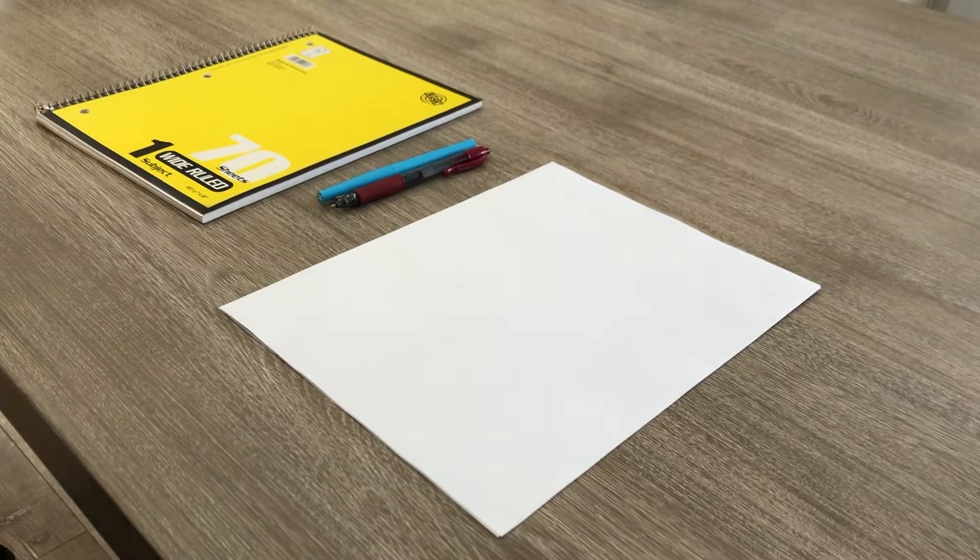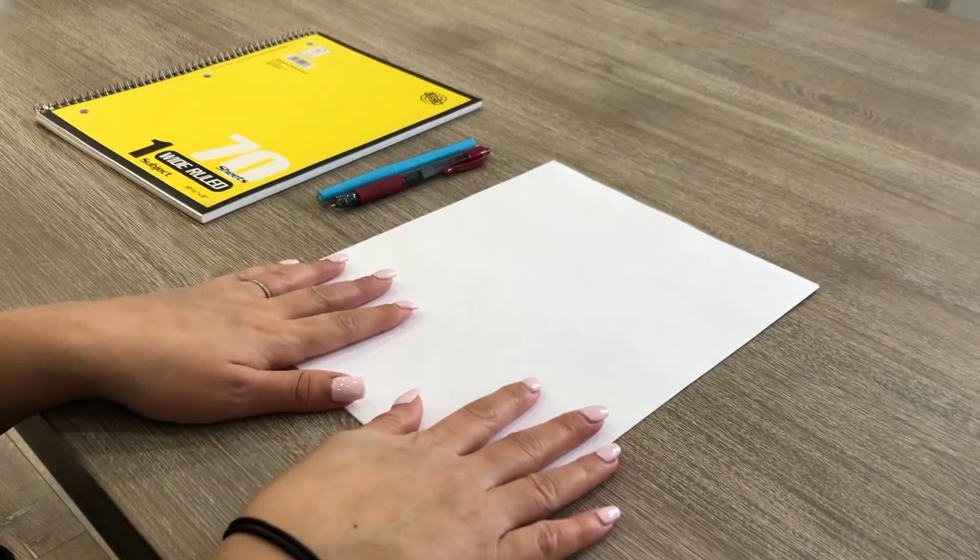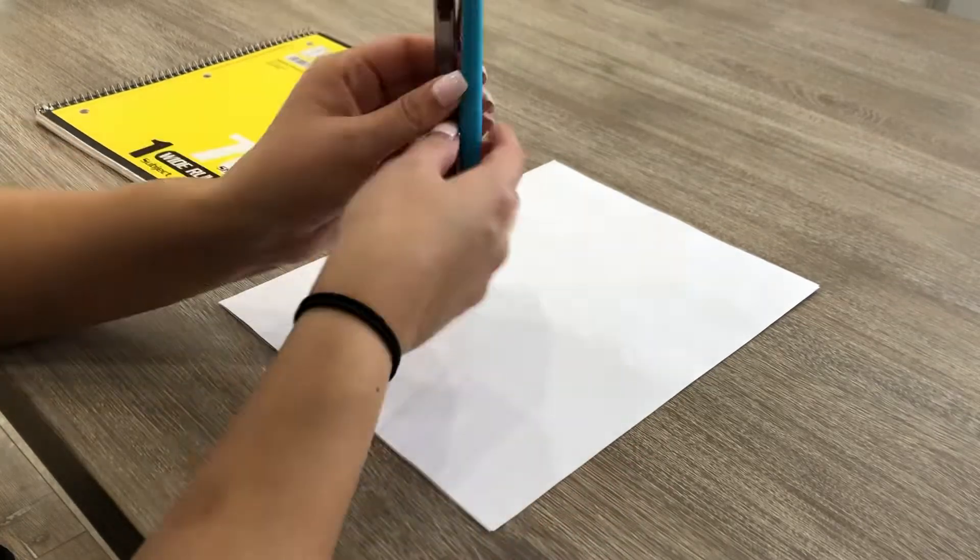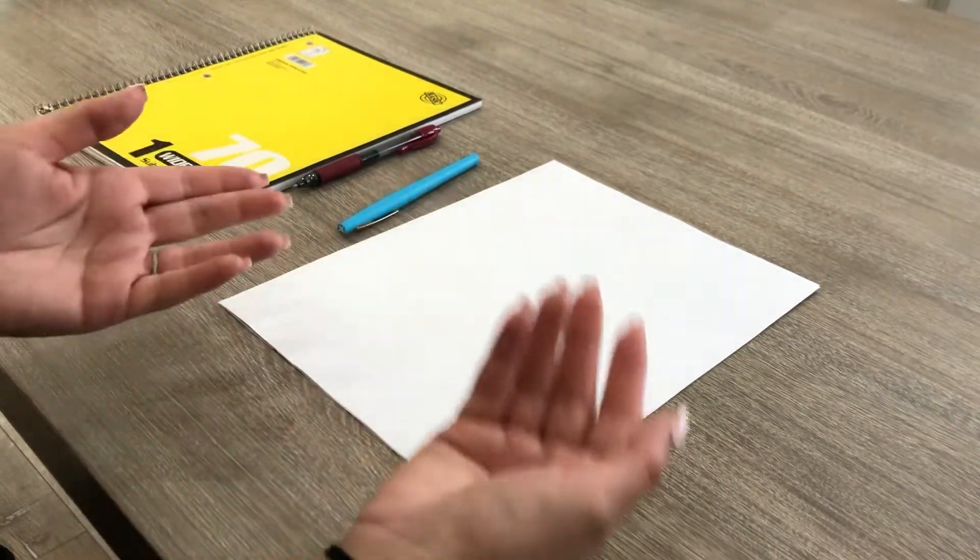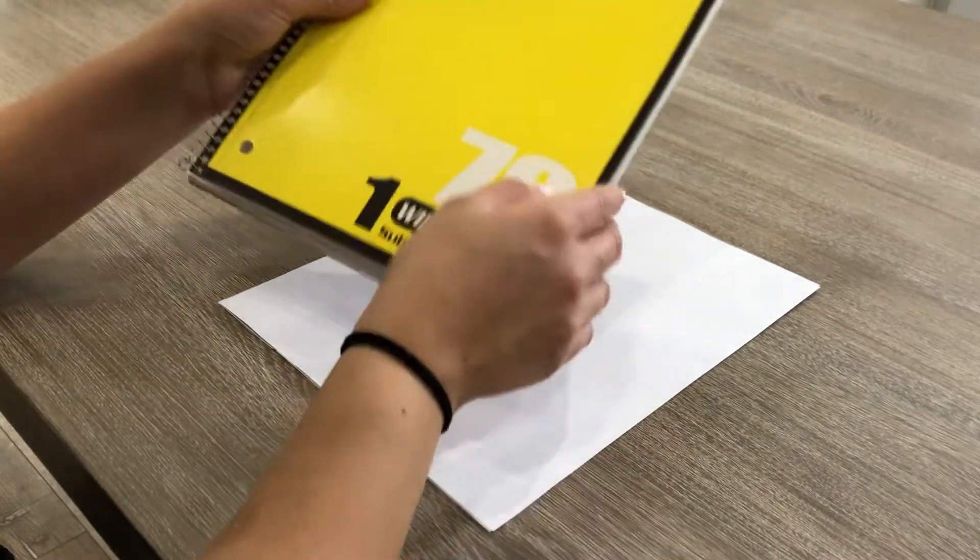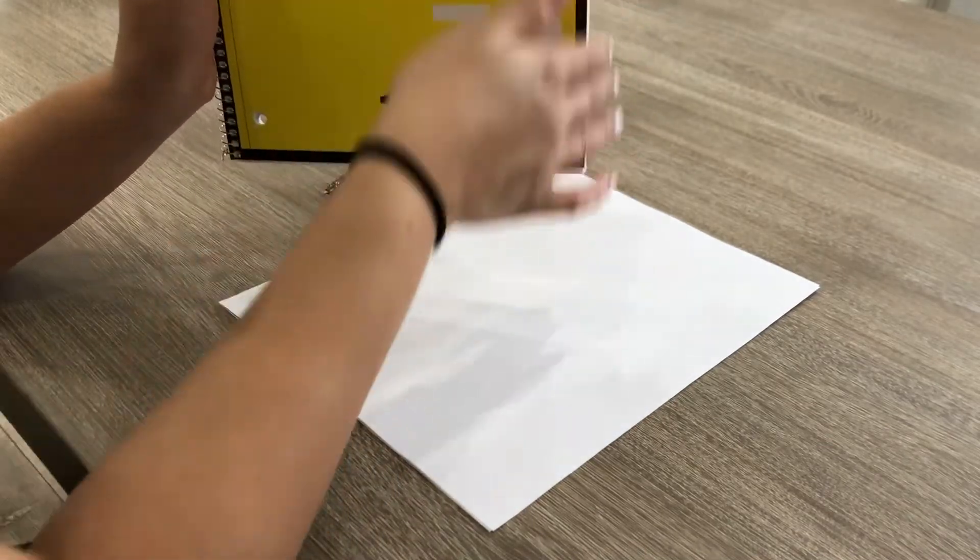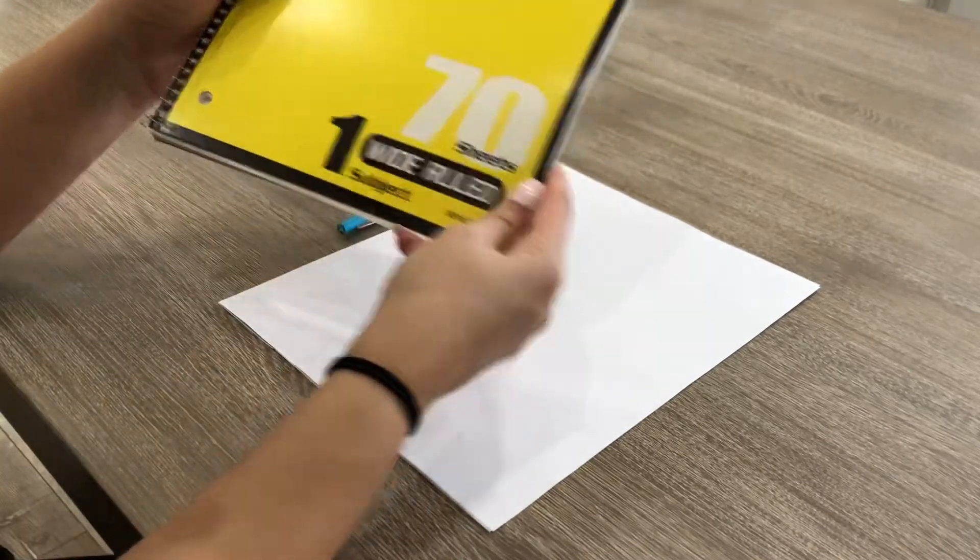So the materials that you are going to need are some pieces of paper, some things to write and color with, and a straight edge like a ruler, but I do not have a ruler so I'm going to use a straight edge on this notebook paper.